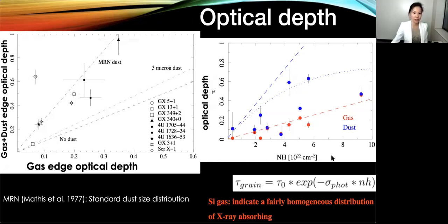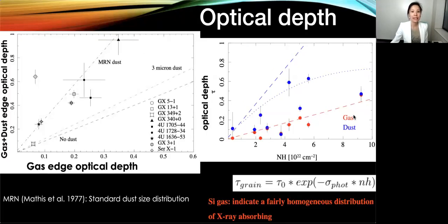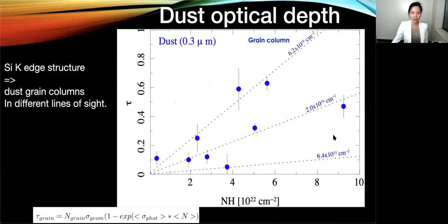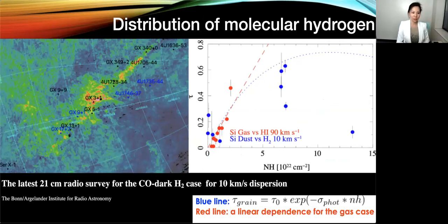We can use this to calculate the dust grain columns. Here it's the same dataset, plotting only the dust optical depths. From different directions, we can calculate the dust grain columns based on different dust grain sizes. At the end, we compare our results with the latest 21 centimeter radio survey for the CO and H2 case at 10 kilometers per second.